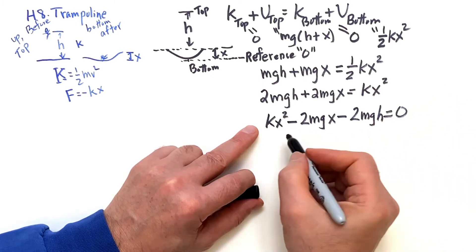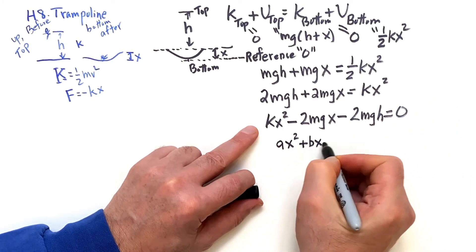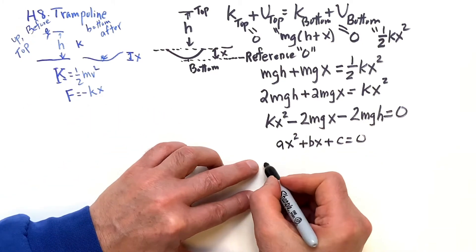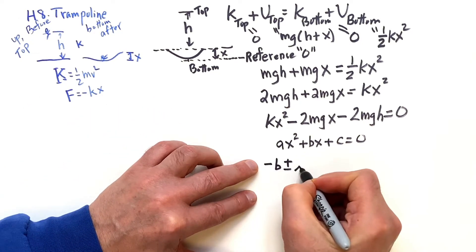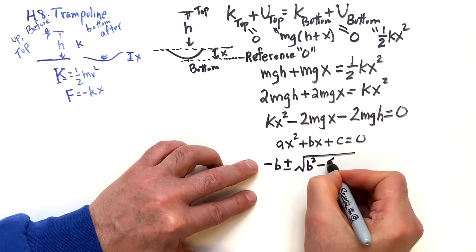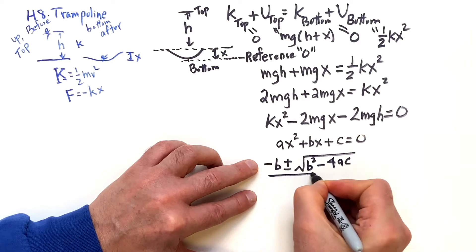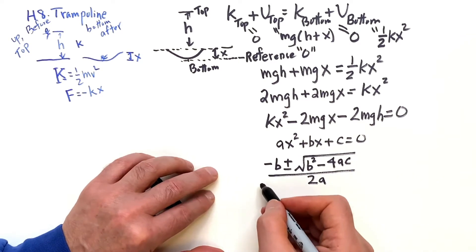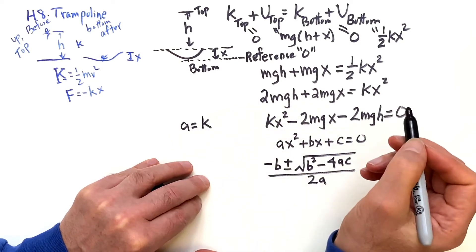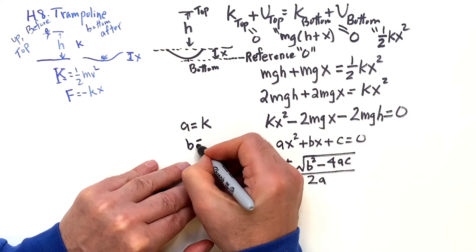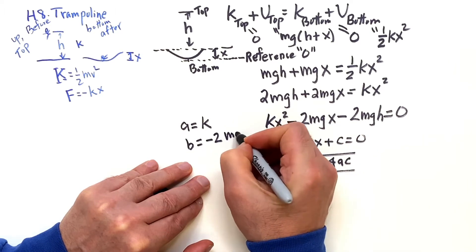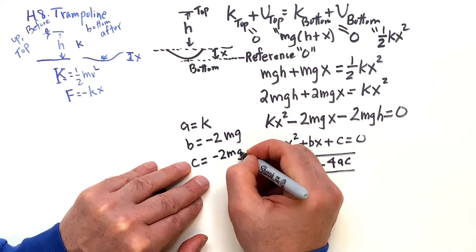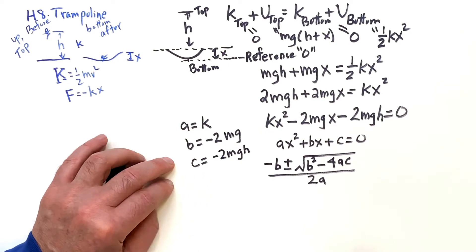Your standard form is ax squared plus bx plus c equals zero. And then when you apply the quadratic formula, the solution is minus b plus or minus the square root of b squared minus 4ac all over 2a. So in our case, a is equal to k, b is equal to minus 2mg, and c is equal to minus 2mgh.